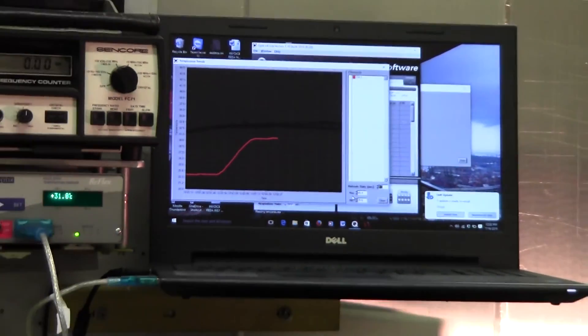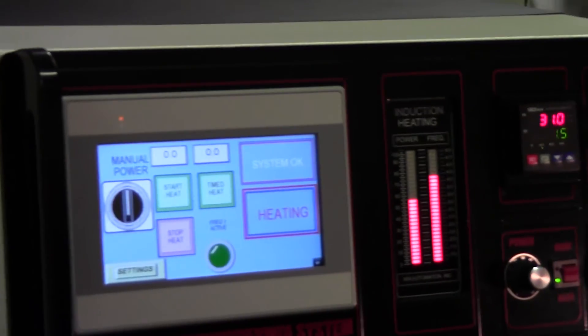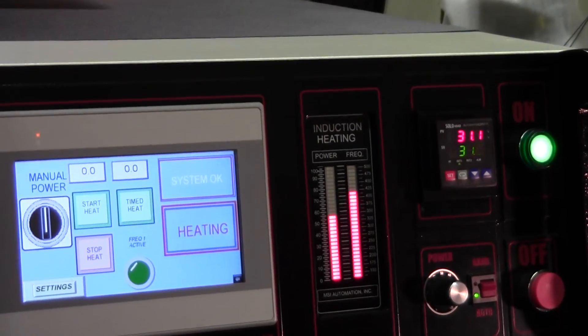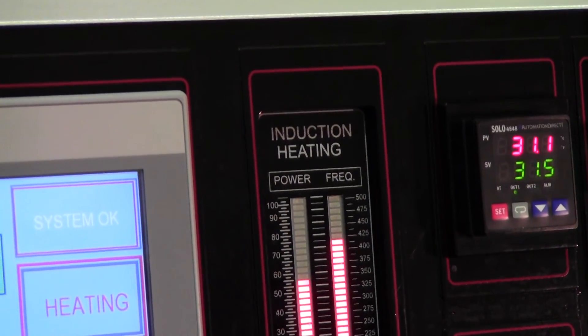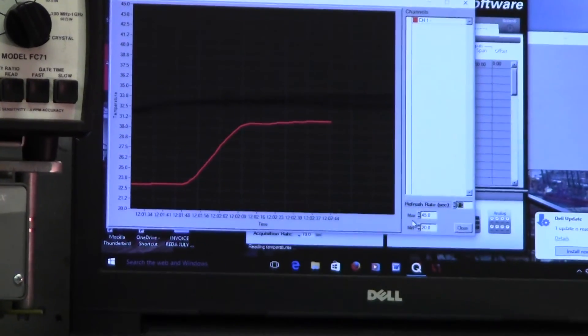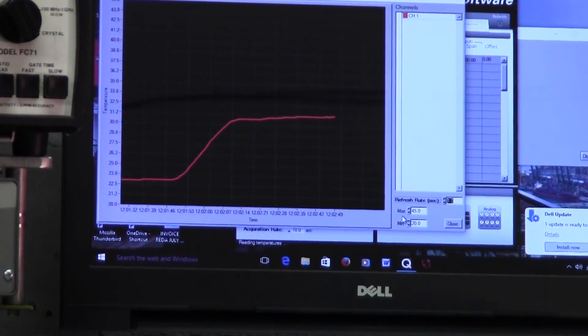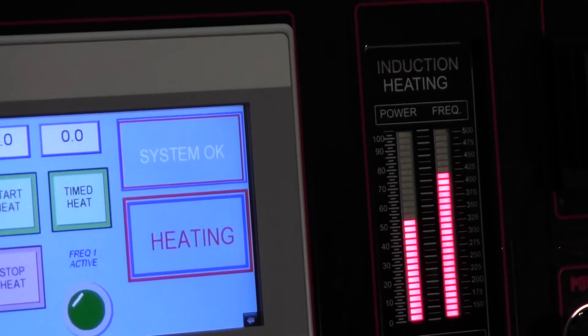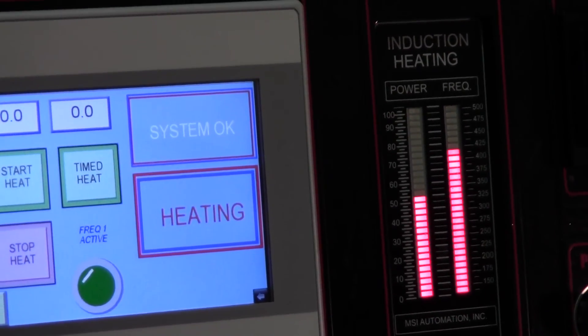Go back over here. I don't know if you can read that. 31 point, 31.1, 31.5. It's almost level. And as you can see from the power meter, the power meter has come down automatically and it's holding at maybe 50% power to maintain that temperature.